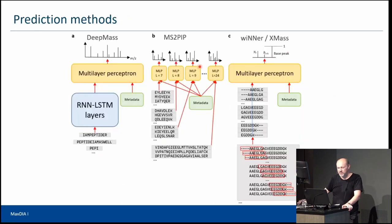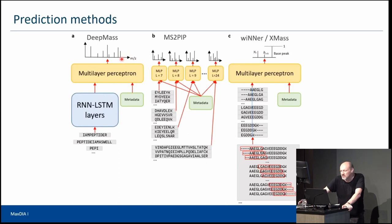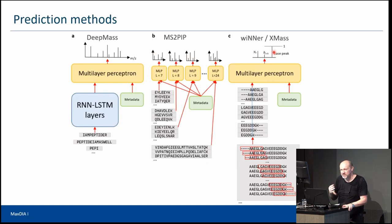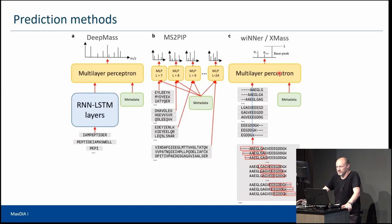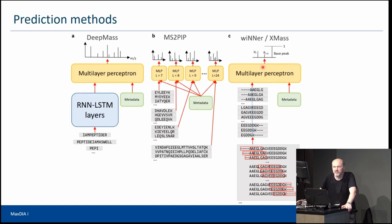Why would one not always use DeepMass, since it performs so well? Because these simpler methods are faster — it takes time to train deep learning models, and they also require big data. Conventional machine learning usually works with fewer training examples, so you can adapt to specific needs: special labellings, modifications, or other customizations. You can train a new model with relatively little data and modest computational requirements, even if the predictive performance may be slightly worse than deep learning.